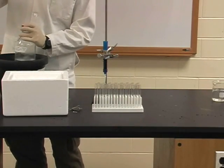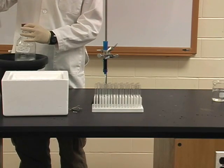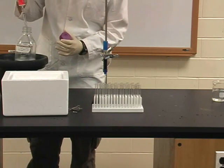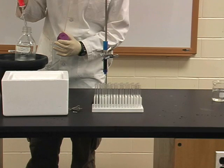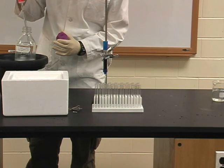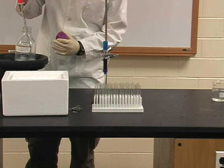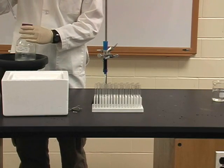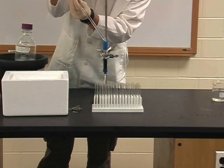After all of your sample has entered the column, you will need to add Tris PMSF buffer to the top of the column in order to keep it from drying out. If your column begins to dry out, cracks will form, which will allow your sample to flow through the cracks, bypassing the column completely, directly into your sample collection tube.